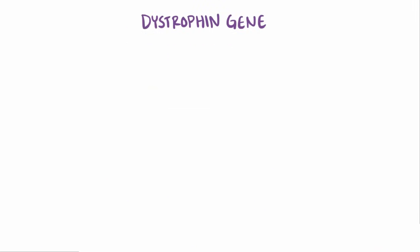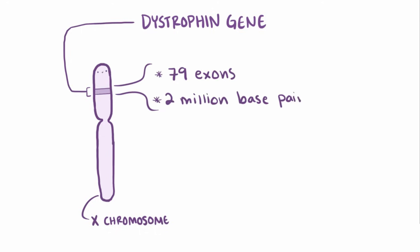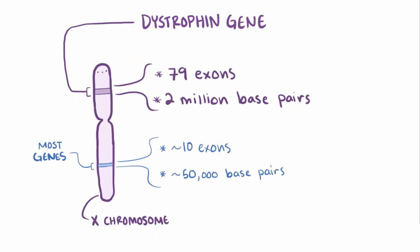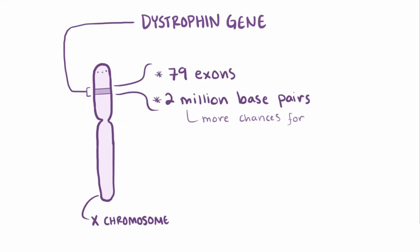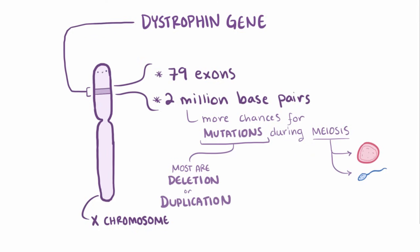The dystrophin gene is a huge gene on the X chromosome that has 79 exons and is over 2 million base pairs in length. By comparison, most genes only have about 10 exons and are 50,000 base pairs in length. More base pairs and more exons means more chances for mistakes during meiosis, when the egg or sperm are created. Most of these gene mutations are deletions or duplications of one or more exons, and a small amount are point mutations.